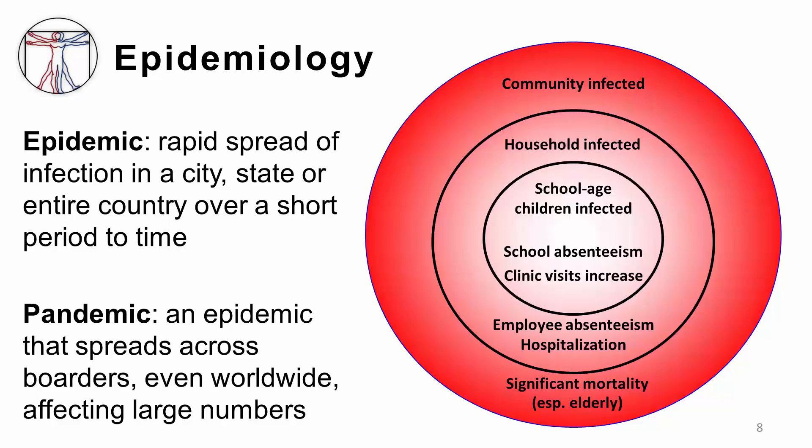There have been several occasions in history that the influenza virus has grown from epidemic to pandemic proportions. A pandemic differs from an epidemic in that the infection spreads across larger territories, such as continents or even worldwide, affecting millions of people.